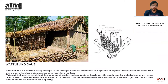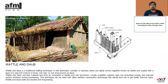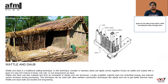Wattle and Daub is a traditional walling technique. In this technique, wooden or bamboo sticks are tightly woven together, known as wattle, and coated with a layer of a mixture of straw, soil, hair, or cow dung known as daub. Wattle and Daub uses less material and time as compared to adobe and cob structures. Locally available materials result in low embodied energy and reduce carbon emissions during processing. This technique can be used with other earthen construction methods like adobe or cob to achieve a better thermal mass. Wattle and Daub walls are durable, long-lasting, and easy to maintain.